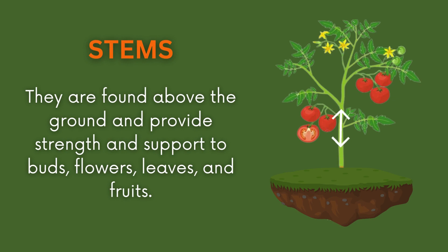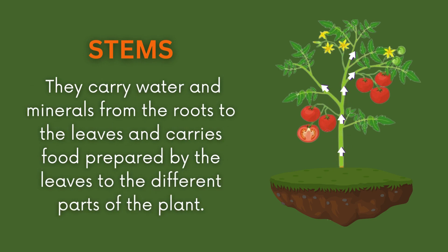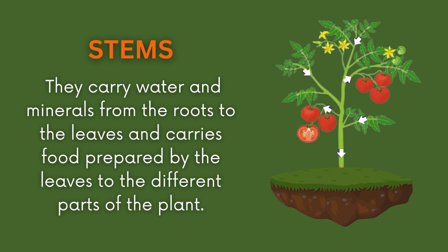Stems are found above the ground and provide strength and support to buds, flowers, leaves, and fruits. They carry water and minerals from the roots to the leaves, and carry food prepared by the leaves to the different parts of the plant.